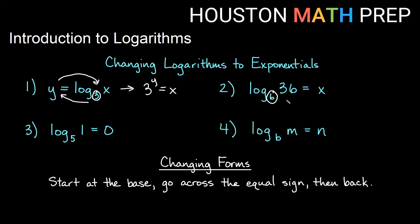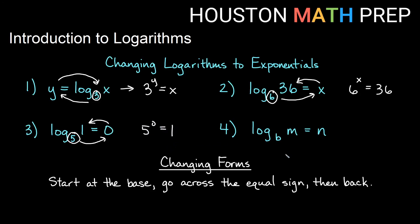When you're first getting started with logs, maybe rewriting in exponential form helps you see what x is. For log base 5 of 1 equals 0, starting at the base, going across the equal sign and then back gives us: 5 to the 0 equals 1. We know that's true, of course. Last one: log base b of m equals n. My base is b. Starting at the base, going across and back, exponential form tells us: b to the n equals m.